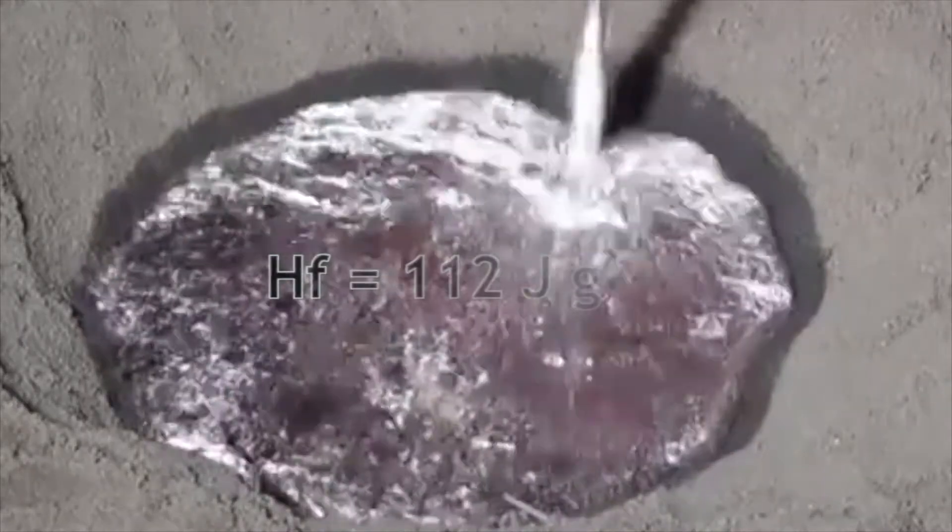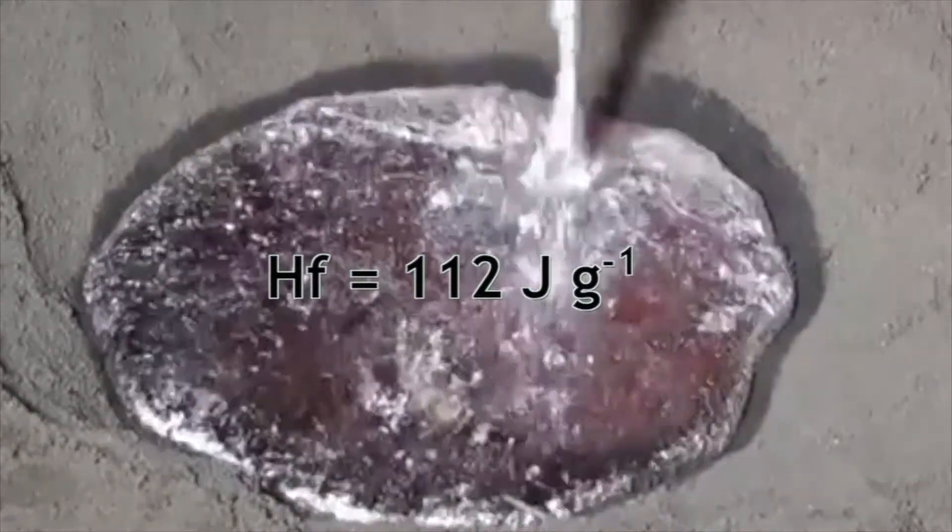Different substances have a different heat of fusion. Paraffin wax of a candle has a heat of fusion of about 200 joules per gram, while zinc has a low heat of fusion of about 112 joules per gram.